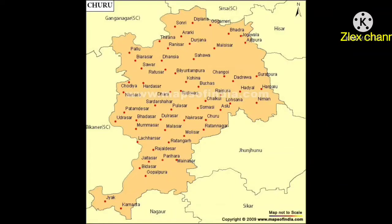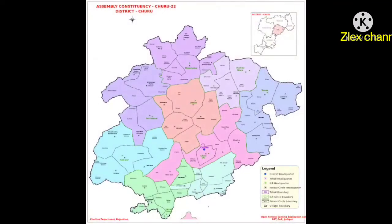Today I am going to tell about the politics of Churu. Churu Lok Sabha Constituency is one of the 25 Lok Sabha Parliamentary Constituencies in Rajasthan State. Presently, the Churu Lok Sabha Constituency comprises 8 Vidhan Sabha segments.